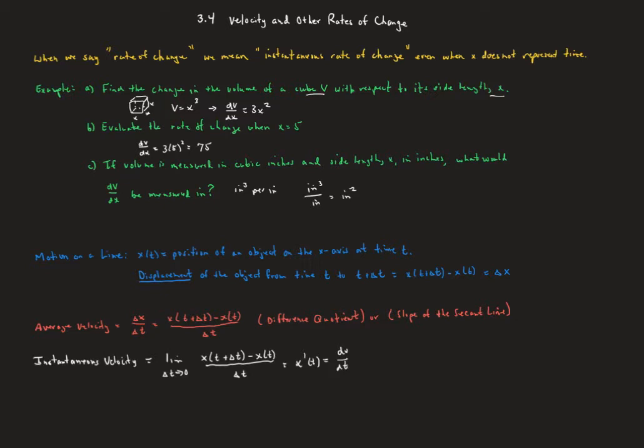So motion on a line, x of t is a position of an object on the x-axis at time t. So our object is going to move along a horizontal line, either right or left or holding still, kind of like maybe a squirrel running along a power line. The displacement of an object from time t to time t plus delta t is given by x of t plus delta t minus x of t, and is also sometimes called delta x, the change in x.